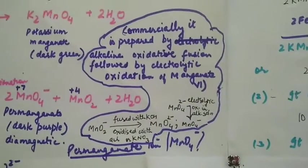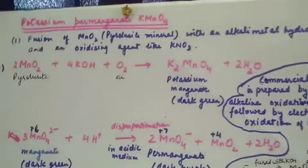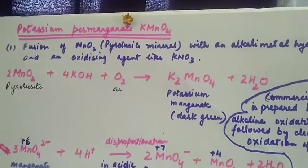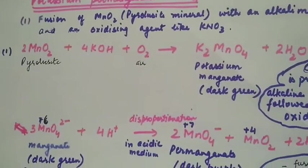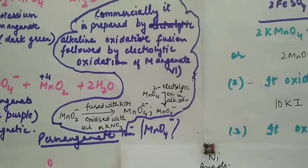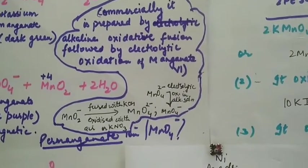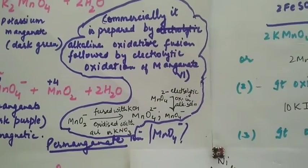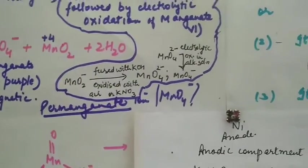Another method used commercially: first step is the same alkaline oxidative fusion of pyrolusite with alkali and oxidizing agent to convert to potassium manganate. The second step is electrolytic oxidation, where we oxidize manganate to permanganate using electricity.